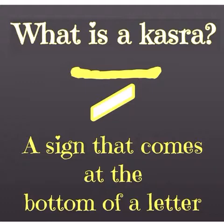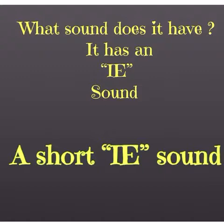What is a kasra? A kasra is a sign that comes at the bottom of a letter. The previous sign we did was called a fath, and it came on top of a letter. Now let's see what sound does a kasra make. It has an ee sound — a short ee sound.